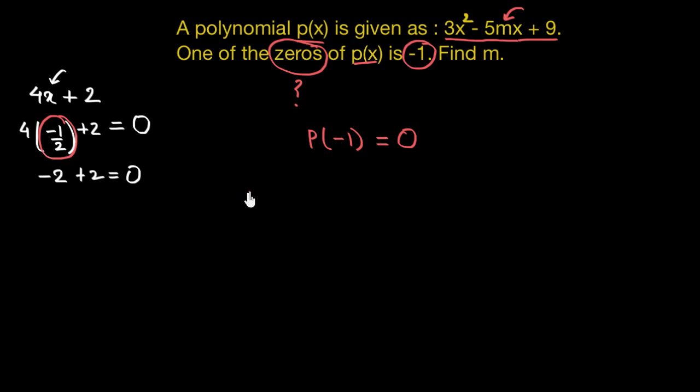So this would give us 3 times negative 1 whole square minus 5 times m times negative 1 plus 9 equal to 0.